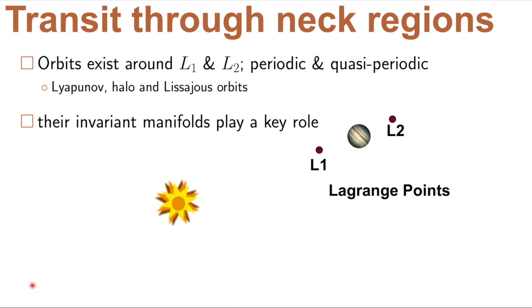These are two key Lagrange points that, for example, in a test particle in the field of the Sun and a planet, they open up on either side of the planet. And it's their periodic and quasi-periodic orbits around these unstable Lagrange points and their invariant manifolds that play a key role in this fast transport mechanism.